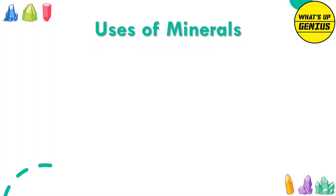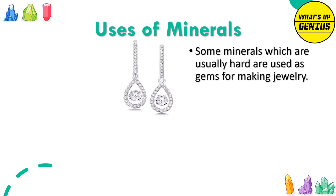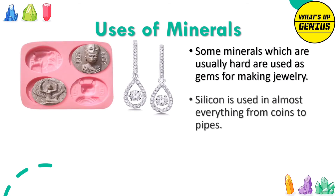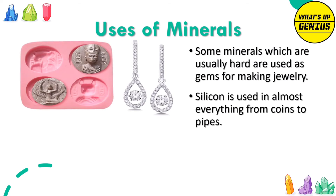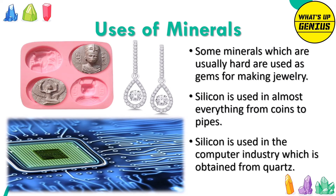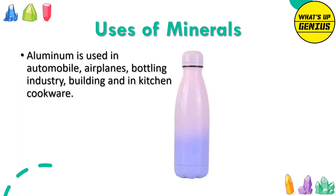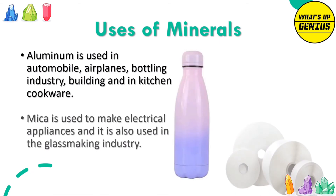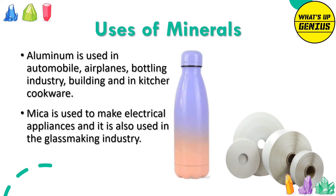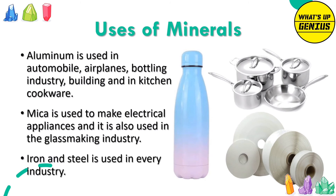Uses of Minerals: Some hard minerals are used as gems for making jewellery. Silicon, obtained from quartz, is used in the computer industry. Aluminium is used in automobiles, airplanes, the bottling industry, buildings and kitchen cookware. Mica is used to make electrical appliances and in the glass-making industry. Iron and steel are used in every industry.